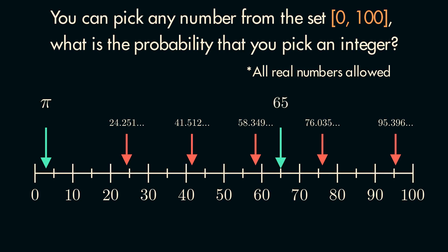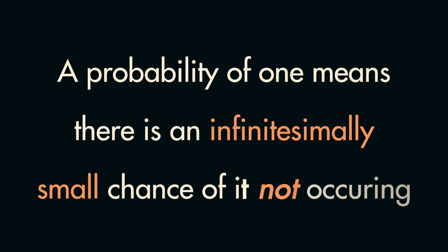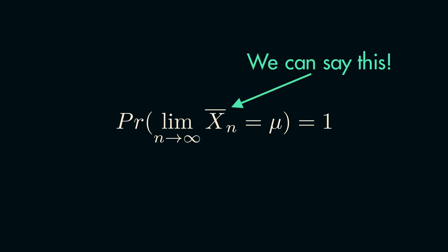Now you clearly know that it is still possible to pick an integer in this scenario, but given that we are picking from an infinite set, the probability of picking one is infinitesimally small. This gives you the intuition behind what a probability of 1 means, where there is essentially an infinitesimally small chance of it not occurring. There is also a reason why we cannot say the even stronger statement that as the number of samples goes to infinity, the sample mean equals the population mean, but there is still the extremely small chance that it may not, hence we have to talk about the probability of the event being 1.